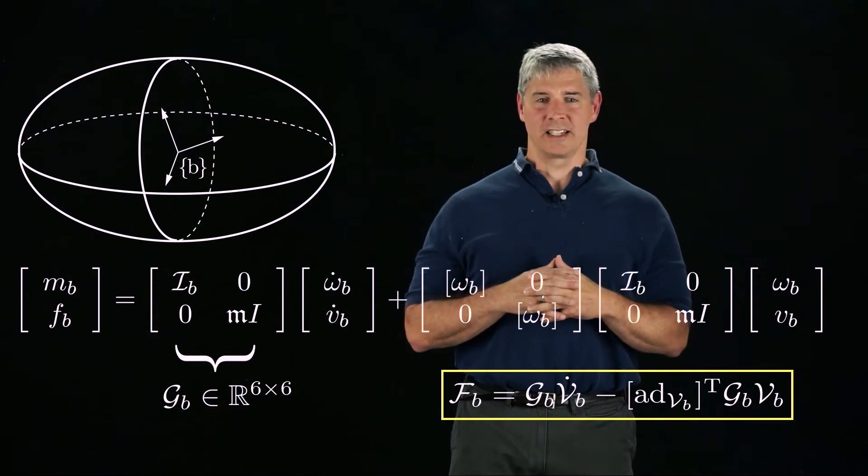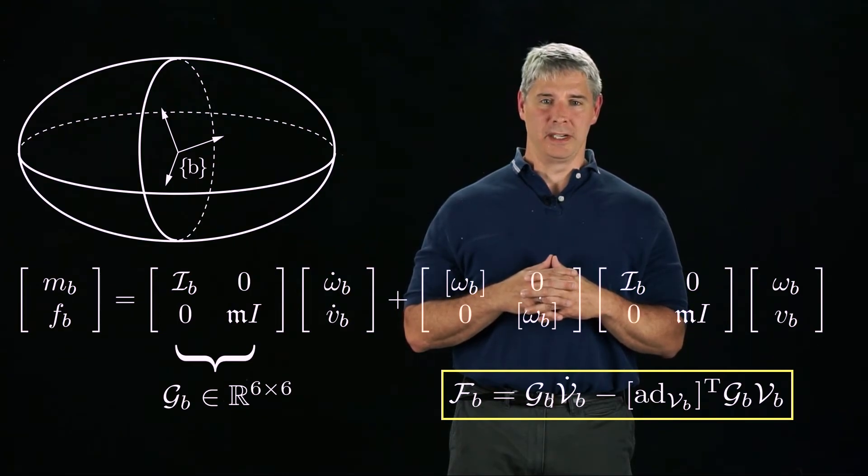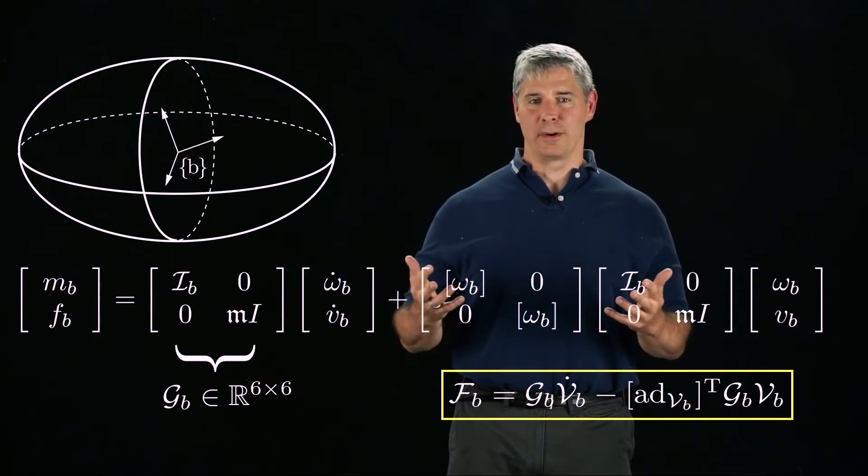This equation is analogous to the equation for a rotating rigid body, replacing the rotational inertia matrix IB with the spatial inertia matrix GB, the angular velocity omega B with the twist VB, and the cross product with omega B with the Lie bracket with VB.